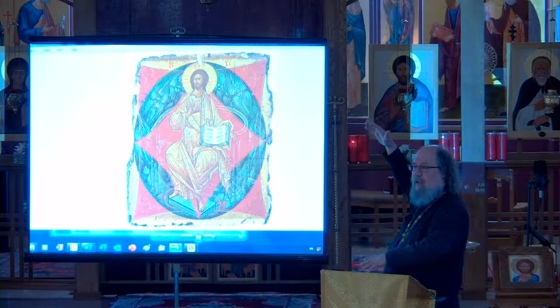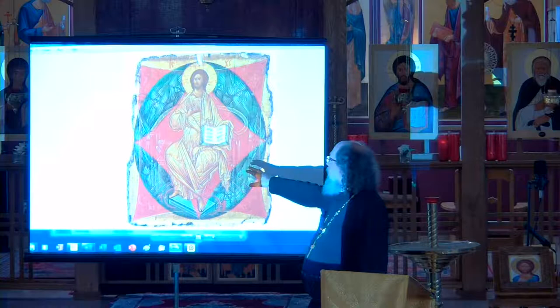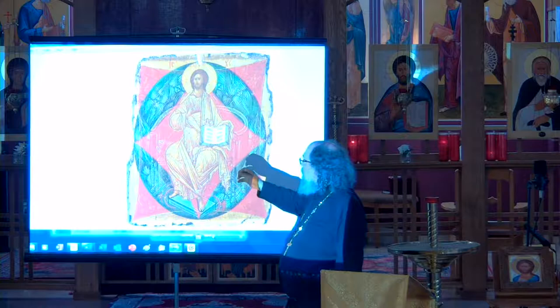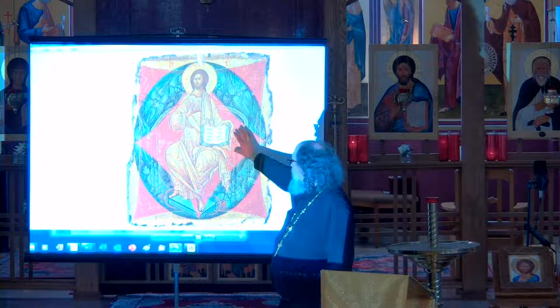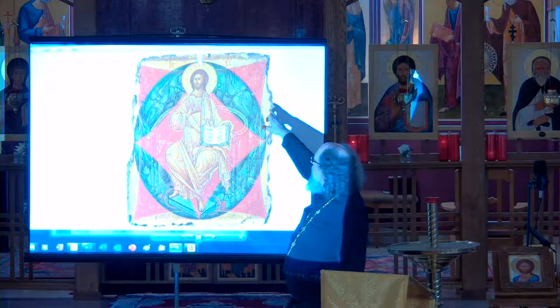Here Jesus is enthroned in glory — in gold, or light. You can see his throne, mystical in the background, and he is surrounded by seraphim. You can also see the symbols of the four evangelists, which is exactly what we have on the iconostasis.